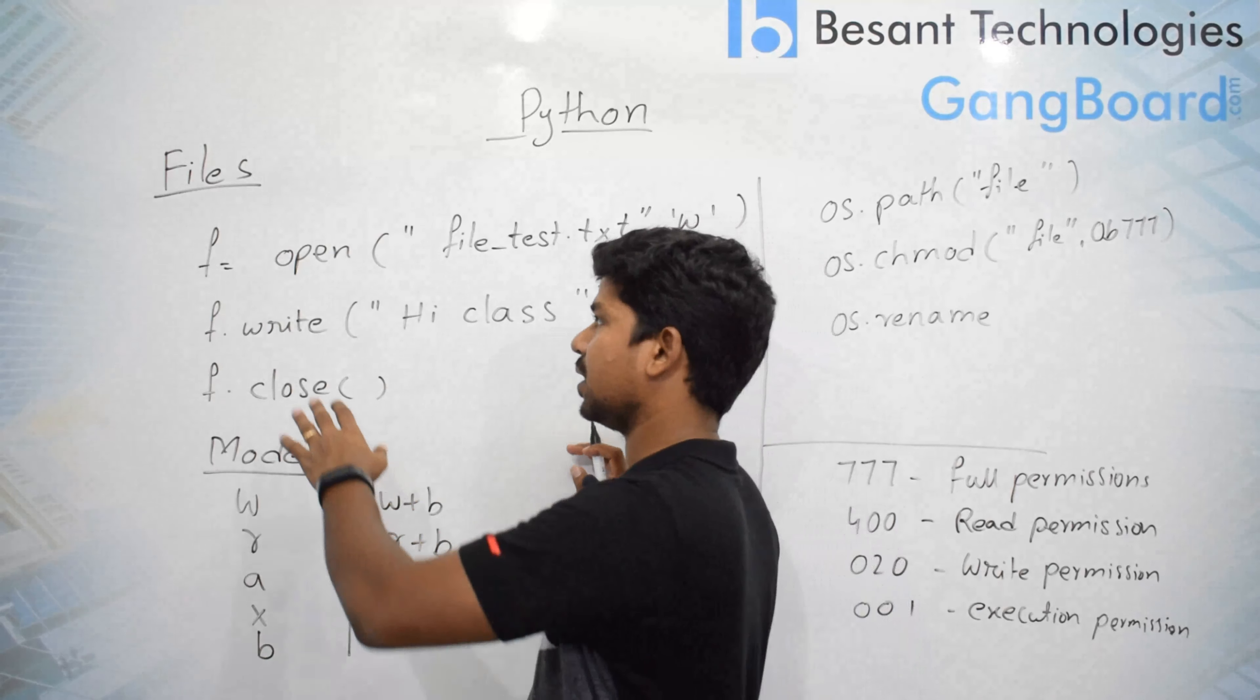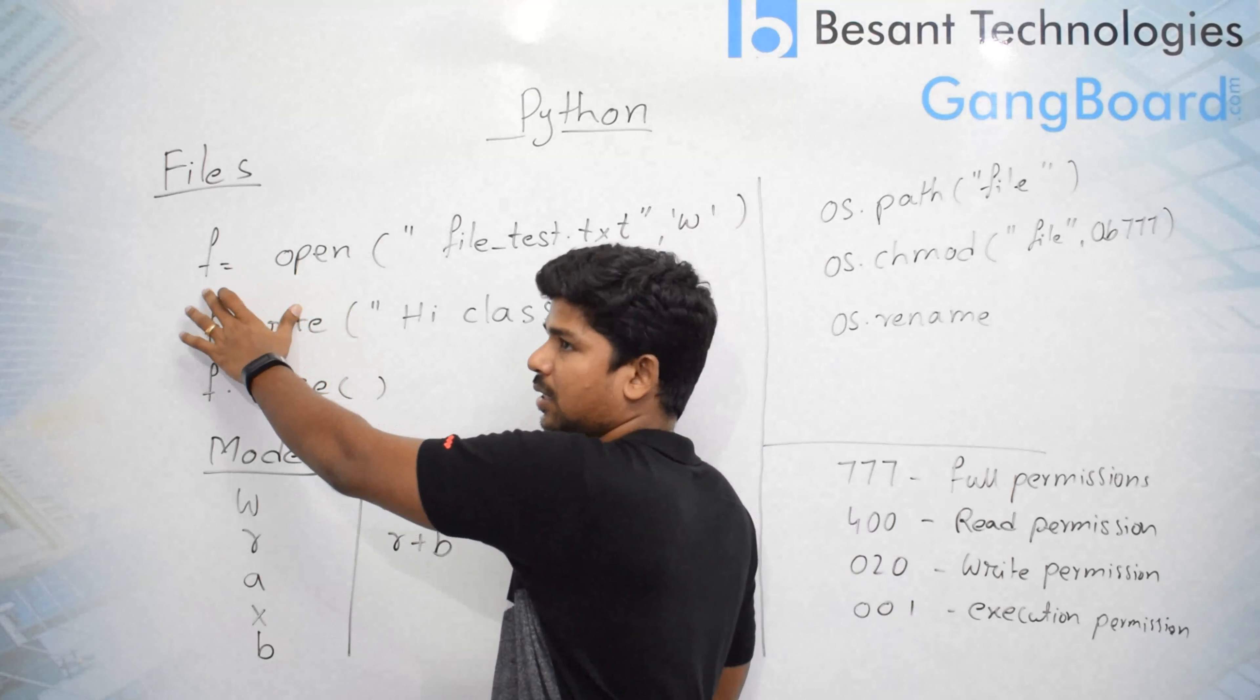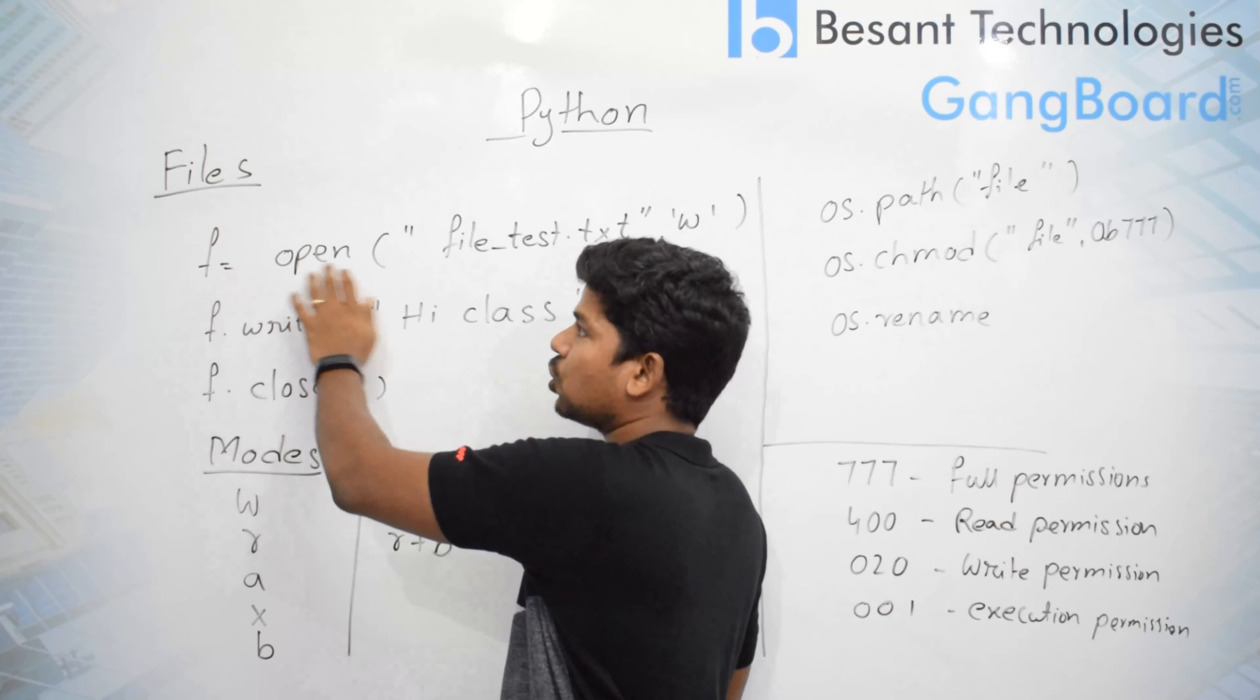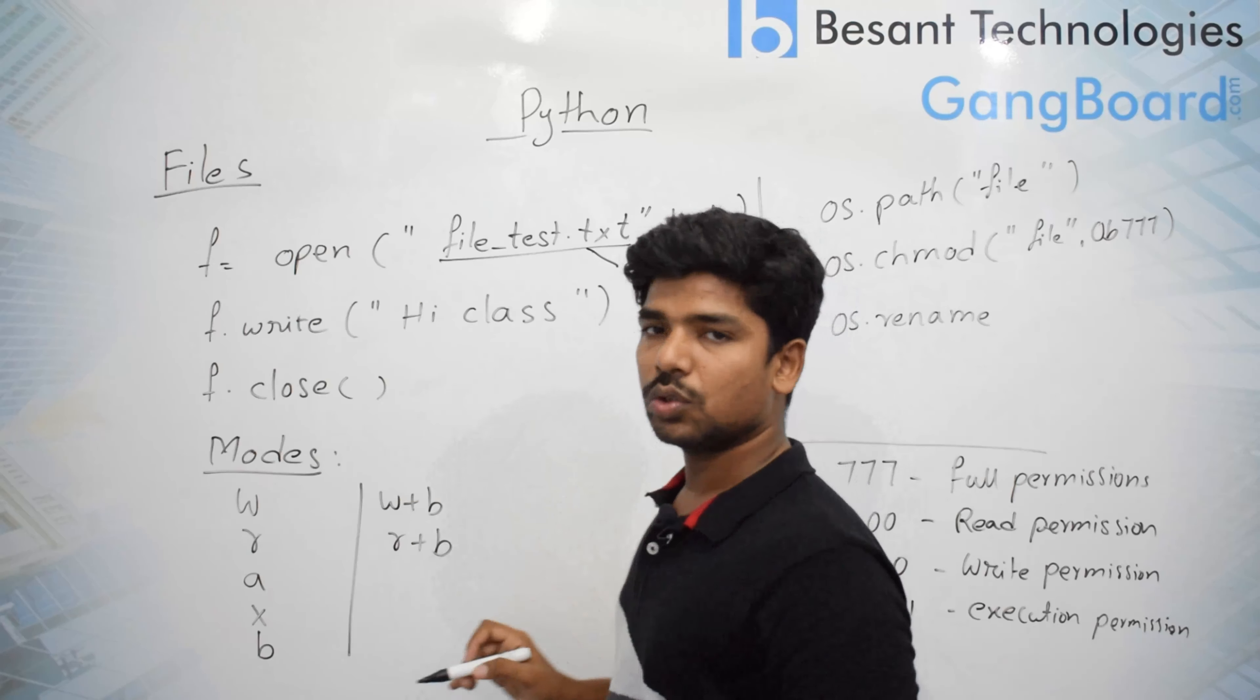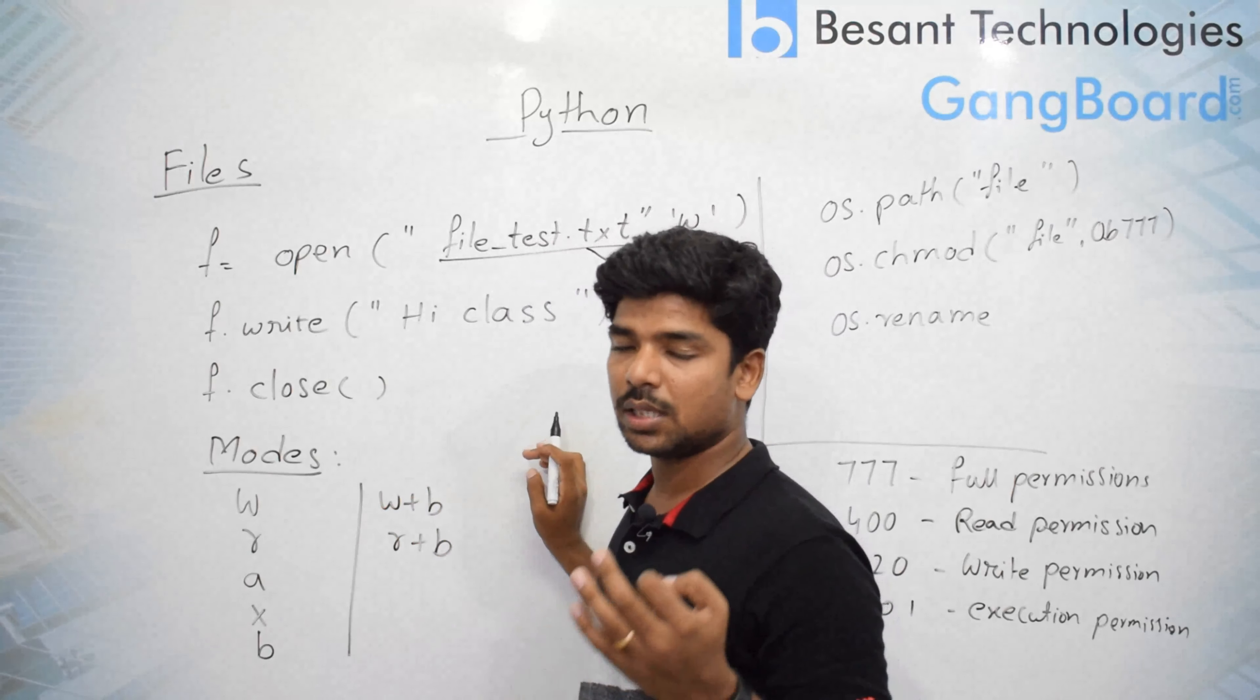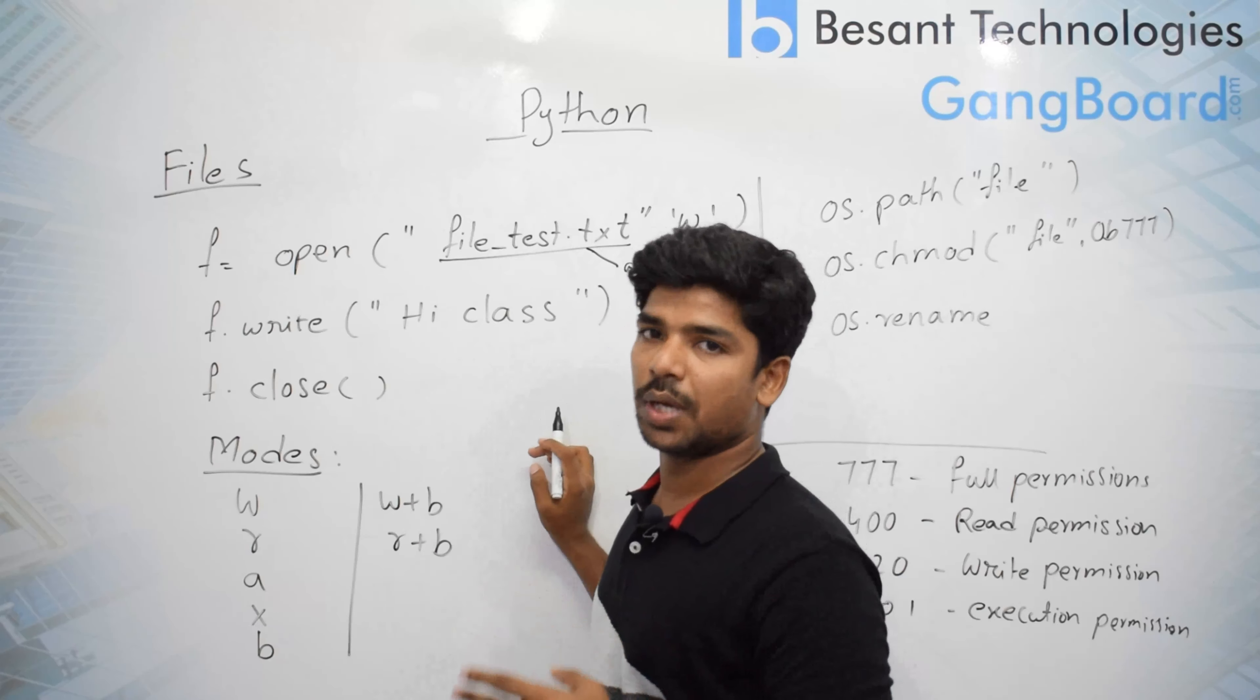In order to write or append or read data in a file, we need to open it first. The syntax is like any variable name or identifier file - this will be called as file header - equals to open of the file path. Absolute path needs to be given. You need to make sure that according to the system - Windows or Linux - you need to give the absolute path correctly.